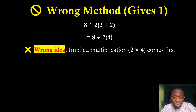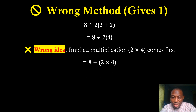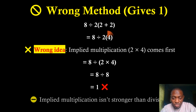If you solve it that way, you get 8 divided by 8, which gives you 1. That is wrong, because implied multiplication is not stronger than division.